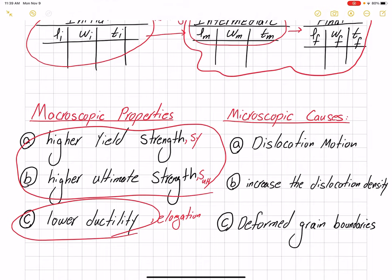We measure ductility by looking at the elongation, but it's also important to understand what's happening inside the material at the microscopic level that is causing such macroscopic properties. The microscopic causes include: dislocation motion is changing, dislocation density is increasing, and grain boundaries are deformed. What distinguishes engineers from technicians is the understanding of microscopic and macroscopic properties and trying to link microscopic causes to macroscopic properties — otherwise we are just doing trial and error.